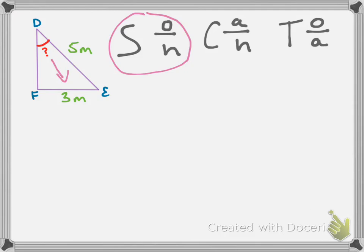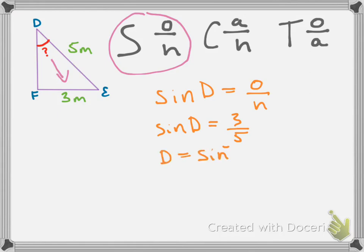Using the sine ratio: sine of angle D equals opposite over hypotenuse, so sine of D equals 3 over 5. To solve for D, we need to apply sine inverse to both sides. D equals sine inverse of 3 over 5, and when you plug that into your calculator you get D is approximately 37 degrees.